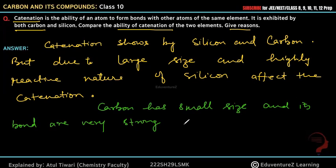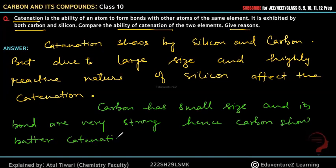Hence, carbon shows better catenation than silicon. Carbon size small, bond strong. I hope this question will be understood, that's all, thank you.